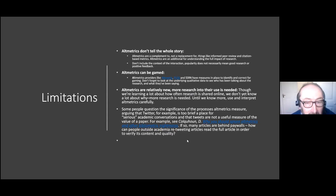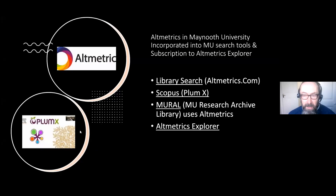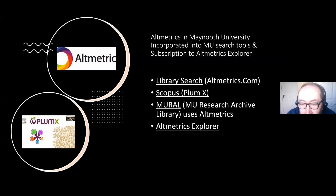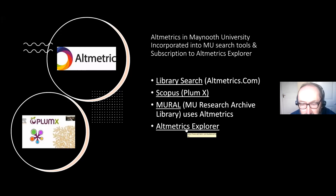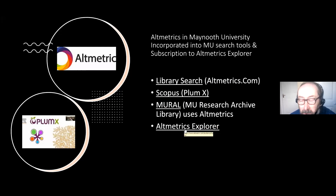Some people question whether a reaction on Twitter really has any importance for serious academic conversations — some say no, some say yes — but it does allow you to track conversations you wouldn't previously have been aware of. Altmetrics in Maynooth: if you use Summon (library search) or Scopus, you might already see these donut shapes when you find an article. Altmetrics.com is already integrated into library search; in Scopus they use a product called PlumX. In MURAL, you'll see a link for any altmetric activity on your papers.